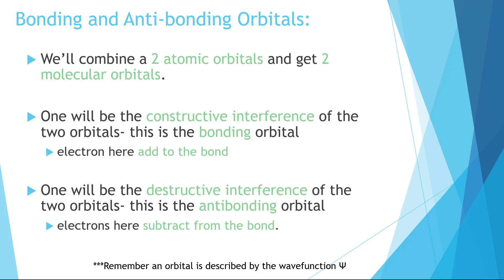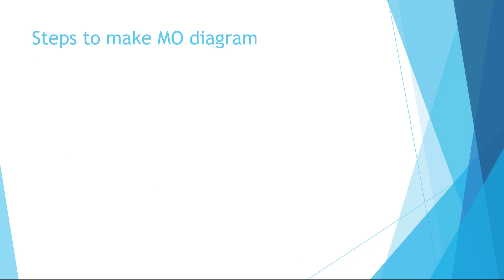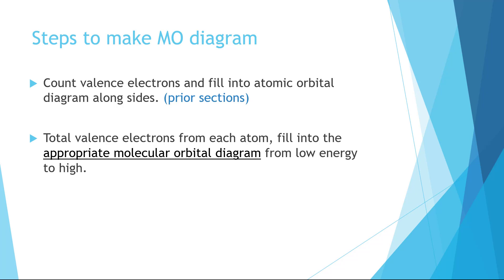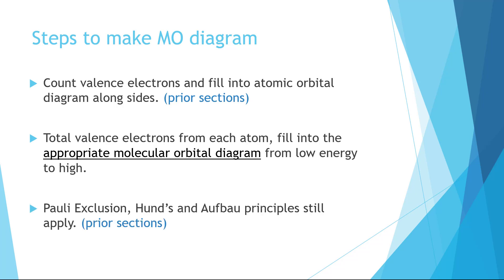If electrons are added to a bonding orbital, it will add to the bond order. If added to an anti-bonding orbital, it will subtract from the bond order. Here are some guidelines for making MO diagrams: first count your valence electrons and draw atomic energy level diagrams, one for each atom involved in the molecule. Between these, place the appropriate molecular orbital diagram. Then count your total electrons from each atom and fill in from low energy to high, obeying all the same rules used in atomic energy level diagrams.